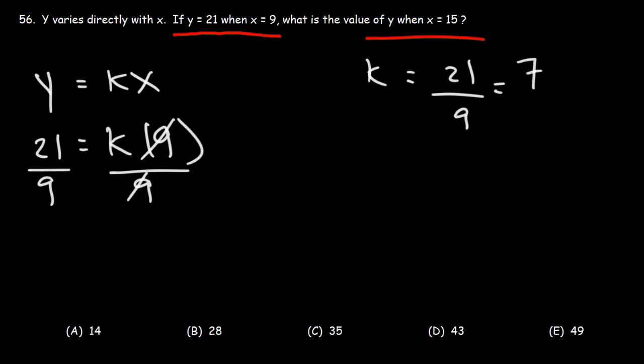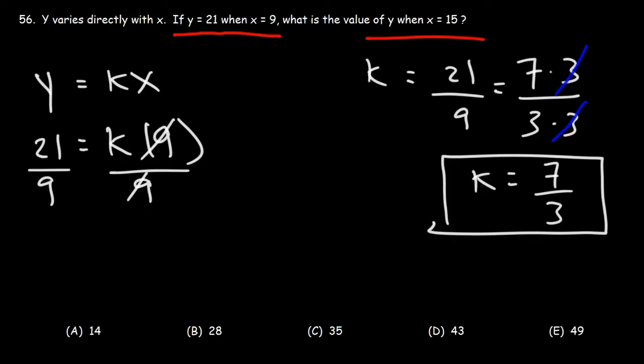Now 21, we can write that as 7 times 3. 9, we can write that as 3 times 3. And if we cancel a 3, we can see that k is 7 over 3.